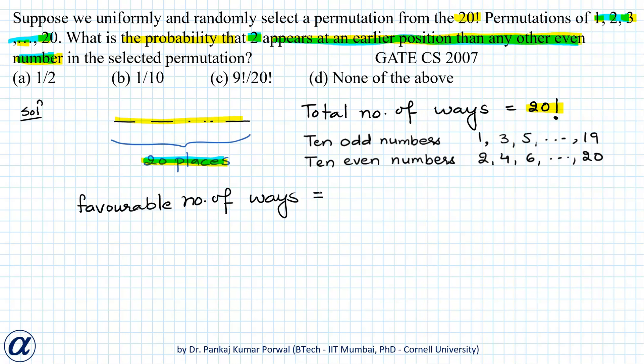So the way to do that will be first we select 10 places out of 20 places in 20 C 10 ways and we arrange the 10 odd numbers in those 10 places in factorial 10 ways. Now we are left with 10 places in those 10 places we arrange even numbers and in the first place we put number 2 so that it appears before all other even numbers and number of ways of doing that will be just 1 then we are left with 9 places and 9 even numbers and we can arrange those 9 even numbers in 9 places in factorial 9 ways.